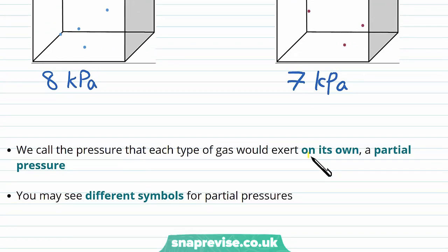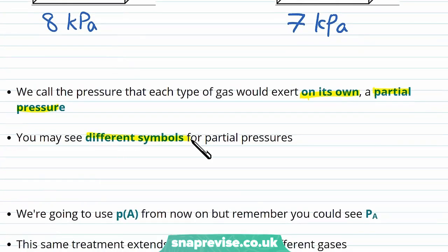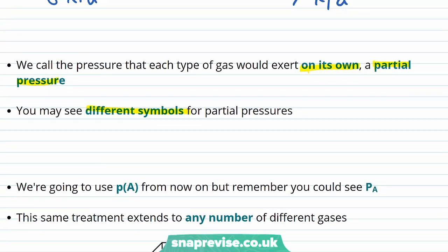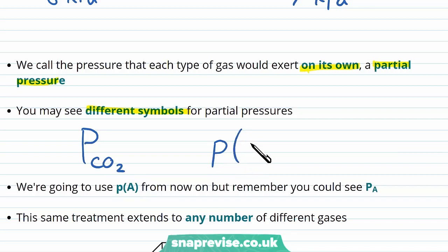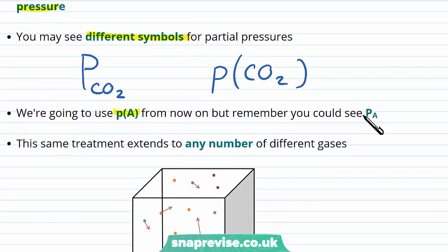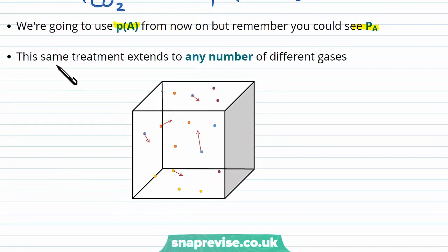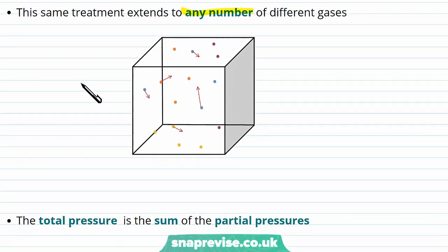We call the pressure that each type of gas exerts on its own — so all the same kind — the partial pressure of that gas, and there are many different symbols to denote partial pressures. For example, the partial pressure of CO2 could be written as P with a subscript CO2, or as P with CO2 in brackets. Both refer to partial pressures, but from now on in this video we're going to use P with brackets. Just remember you could always see P with a subscript in a given question. This same treatment extends to any number of different gases.